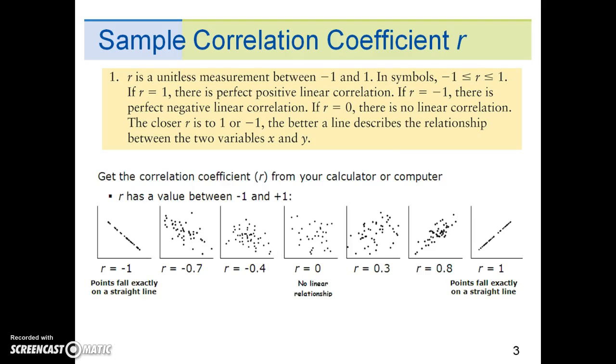This picture attempts to explain the property visually. As shown here, R equals negative 1 has a perfect negative correlation. R equals 0 implies no linear relationship.